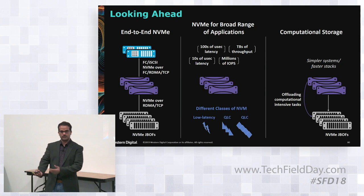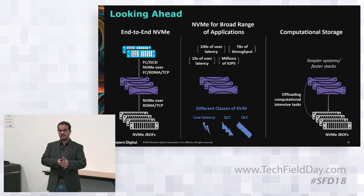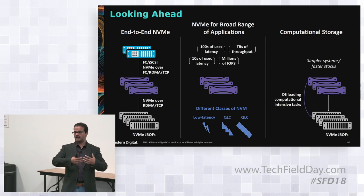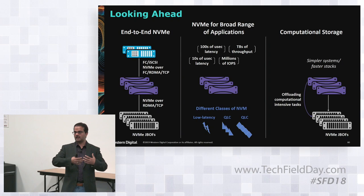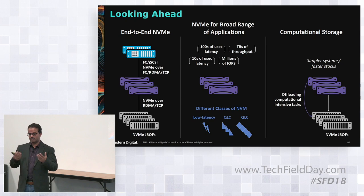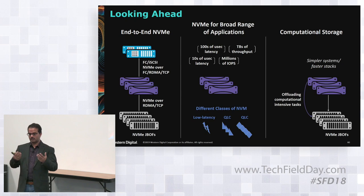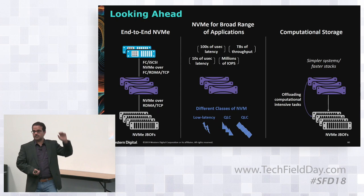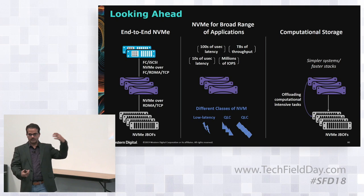One is QLC NAND, which is probably going to appear in our product portfolio this year or next year. That will provide a capacity tier that will be a seamless move into our hybrid storage model — metadata and sequential writes in the faster NVMe tier, and slightly colder data in the QLC NAND tier. Low-latency NAND or storage-class memory we will definitely start exploiting in read-intensive applications — analytics workloads or similar — accessed through RDMA protocol from the client. This will allow us to offload some computational work to the clients, providing even better latency.